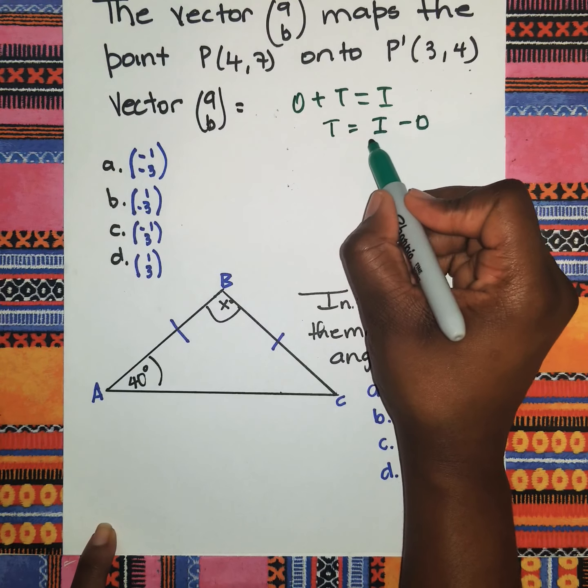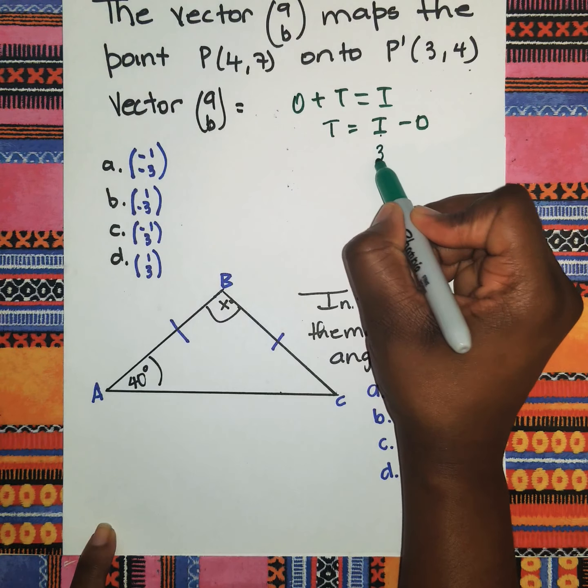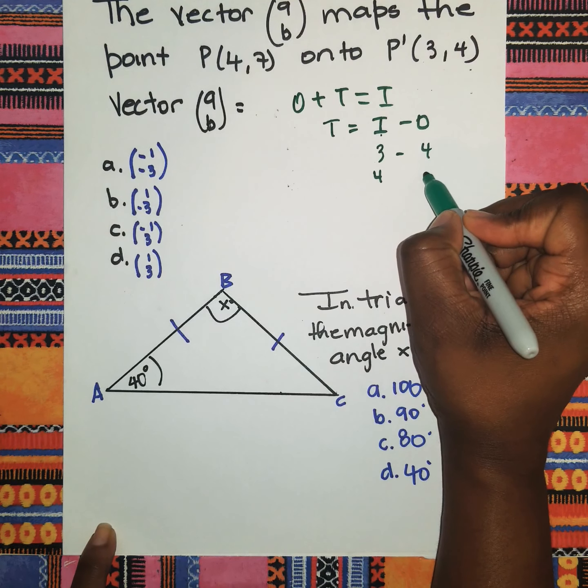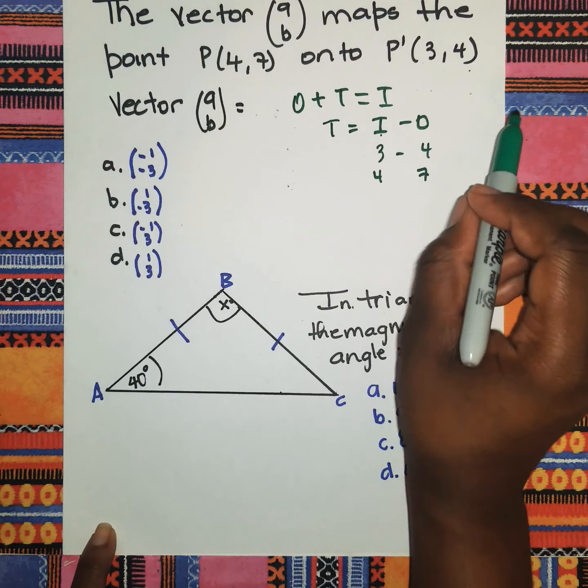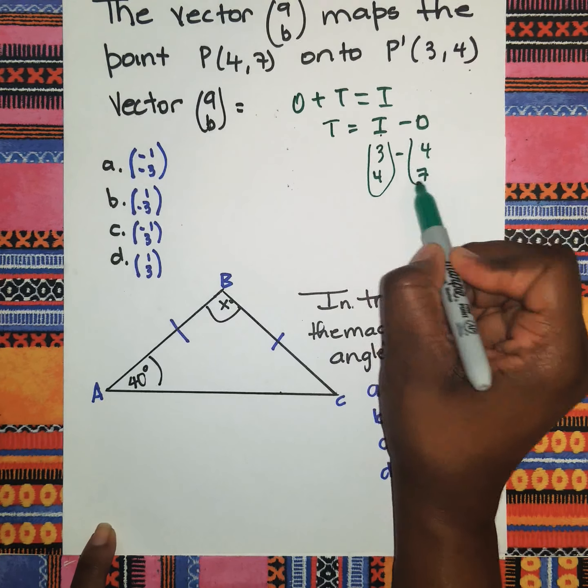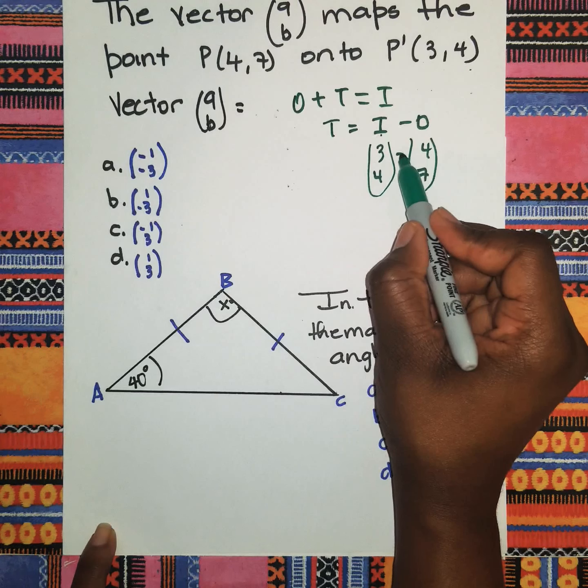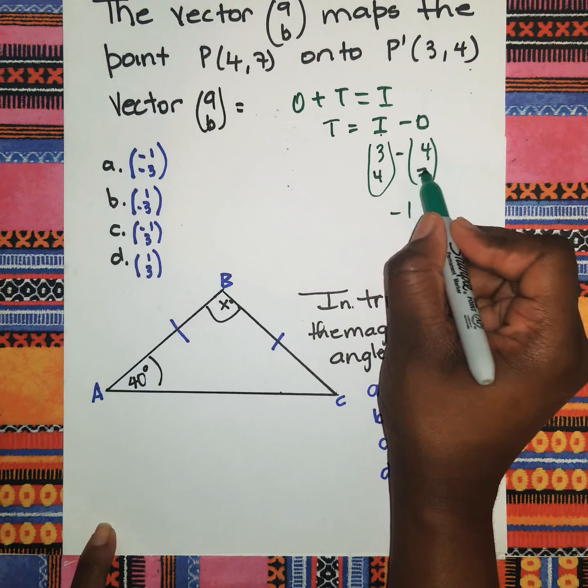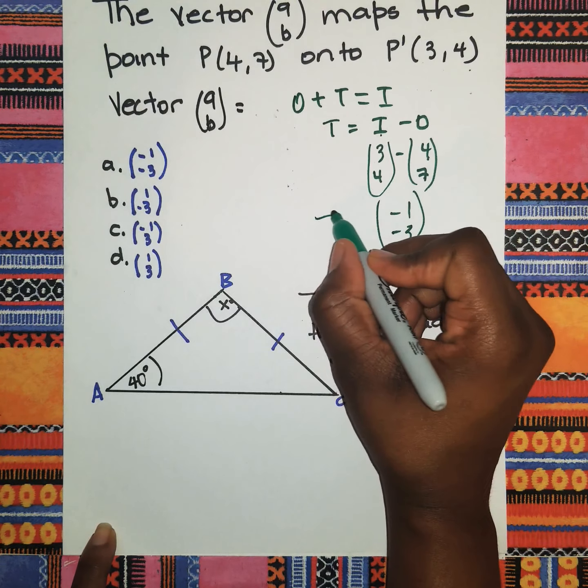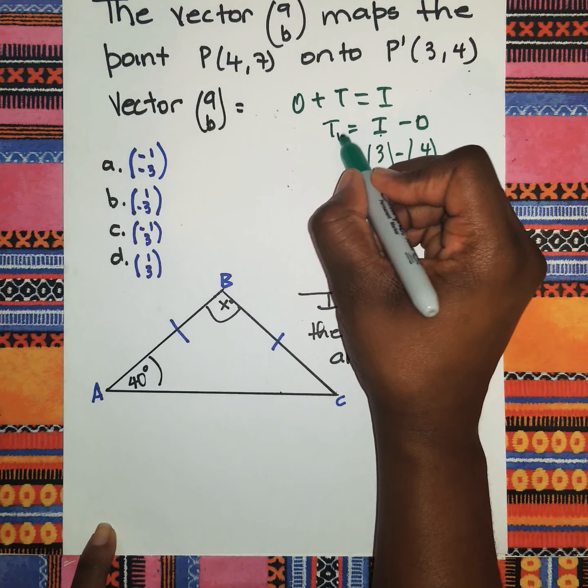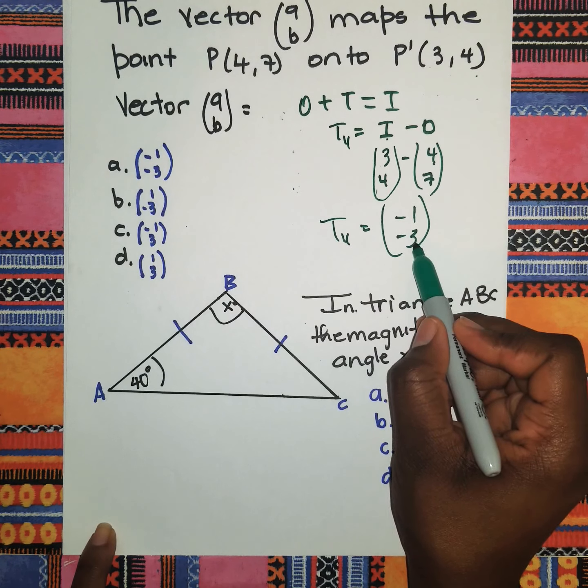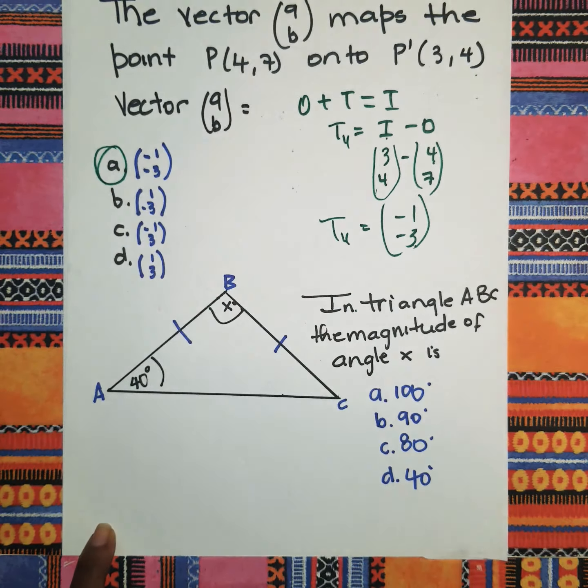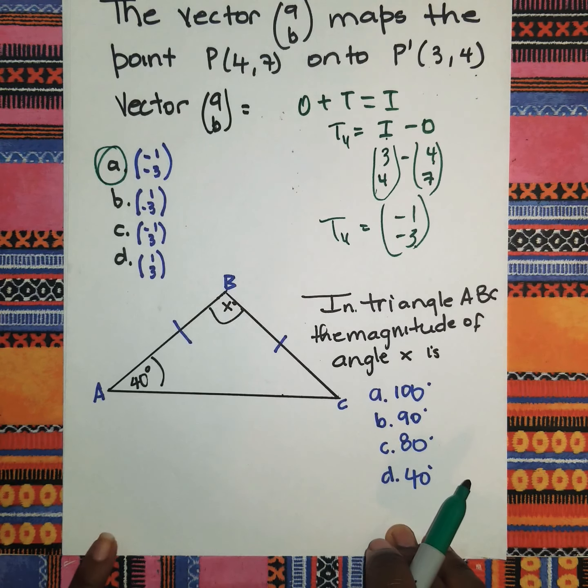The image is (3,4) and the object is (4,7). So it's 3 minus 4 is negative 1, and 4 subtract 7 is negative 3. So the translation vector here is (-1,-3), and the answer is A: (-1,-3).